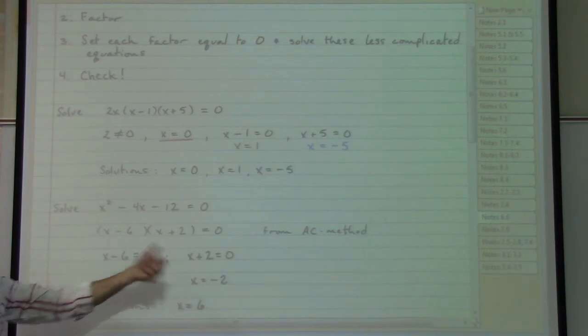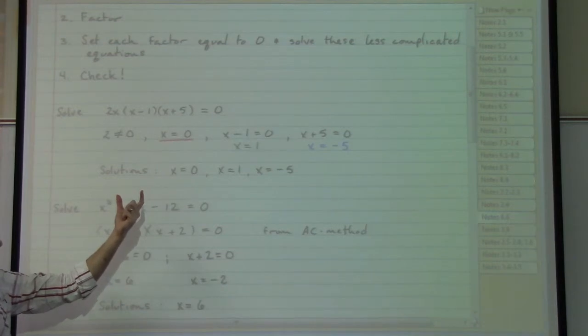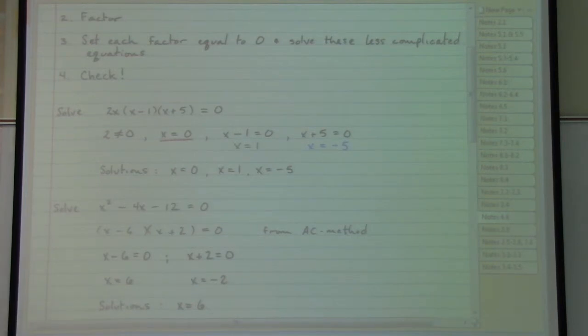If we plug in the negative two, well, we need to be careful with that power. Negative two times negative two is four. Negative four times negative two is positive eight. Four plus eight minus 12 will equal zero. And so we in fact have a second solution in this particular equation, x equals negative two. So now we have, through this particular method, the possibility of getting more than just one answer, but fewer than infinitely many answers.